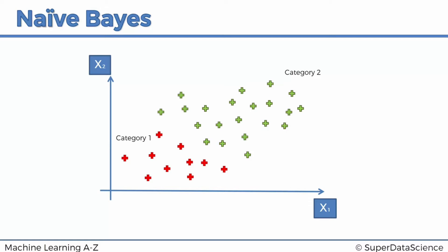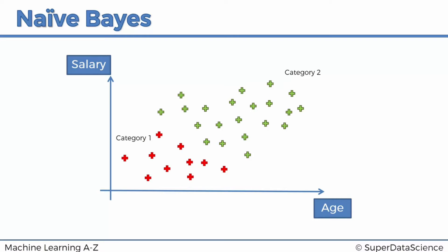Here we've got a dataset. It has two features, X1 and X2, and there are two categories. Instead of working with these abstract terms, we're going to convert them into something easier to understand. We're going to call the Y variable X2 as salary and the X1 variable as age. We're representing 30 people in terms of their age and salary. The categories will be walks, meaning that person walks to work, and green will be drives, meaning that person drives to work.